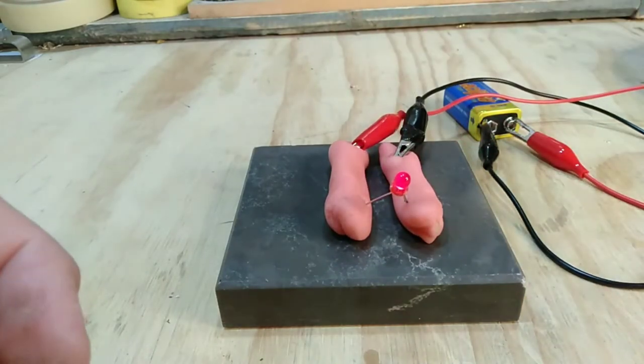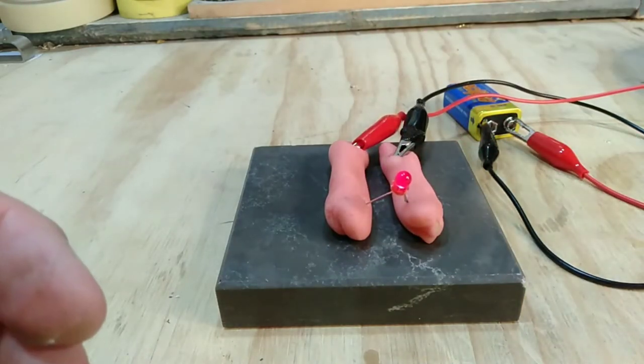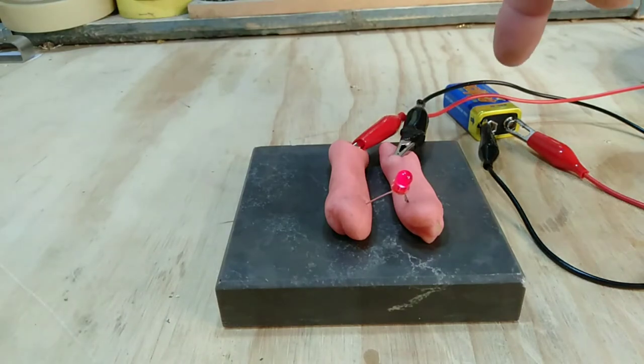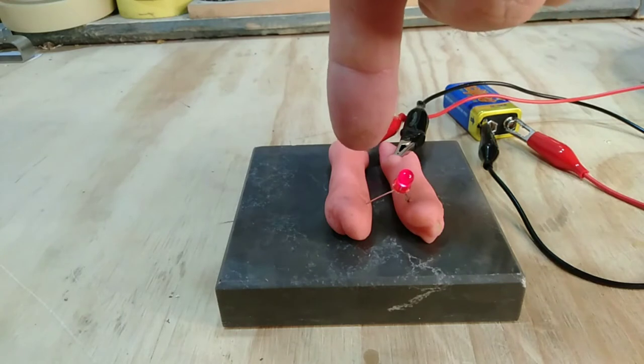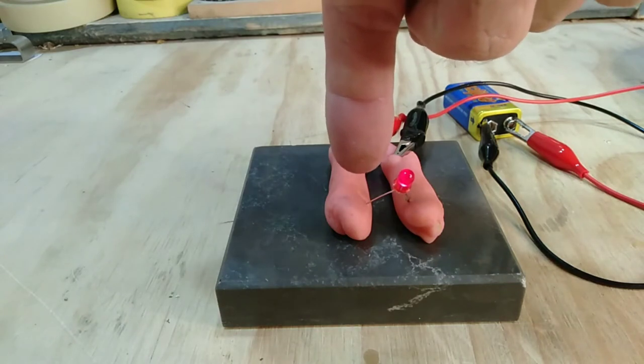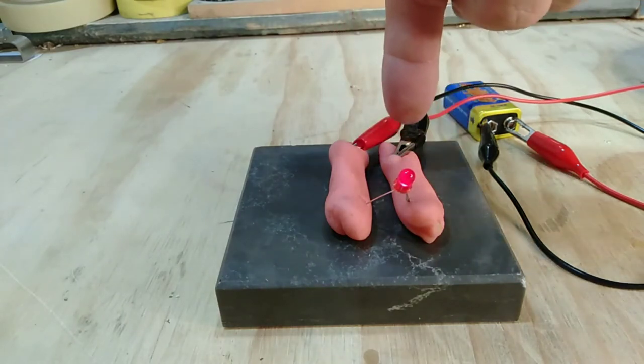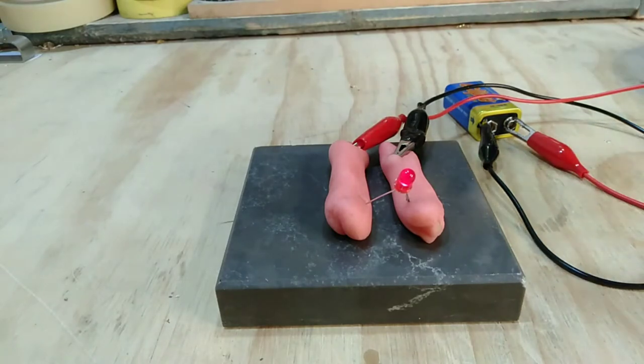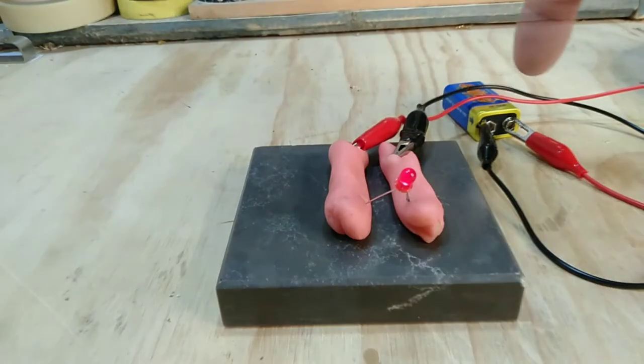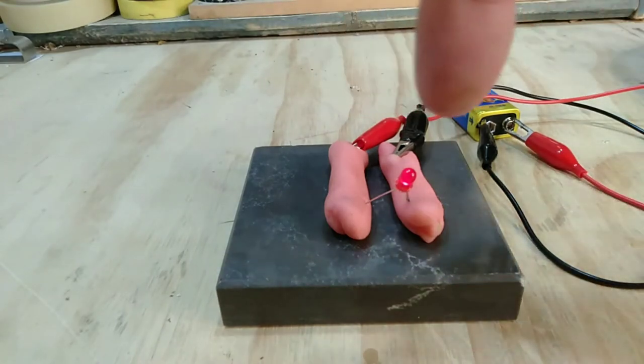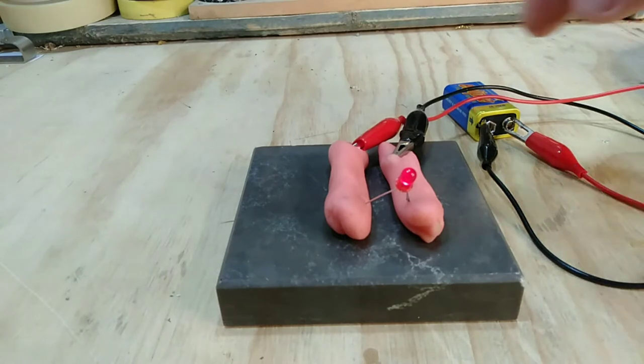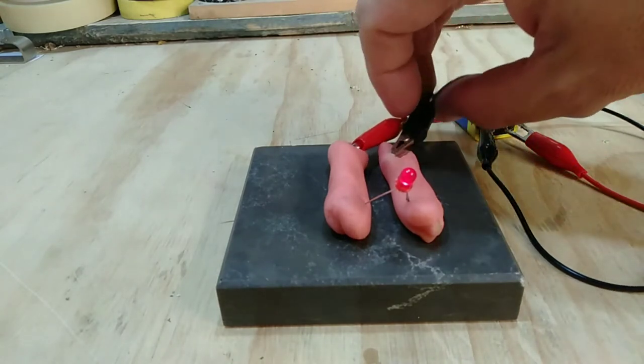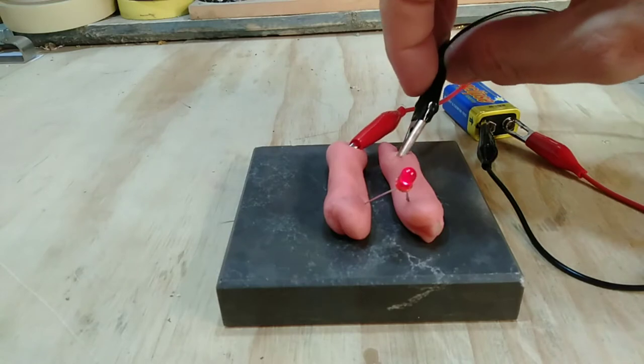And you can see that our LED, our light, has come on. So the positive charge is running through the red cable, through the conductive play-doh, through the LED, and then back around through to the negative. So as the charge runs from the positive and around for our LED and back to the negative, it must be a complete circuit. If we break that circuit at any point, the light goes out. But if we complete the circuit, it comes on.